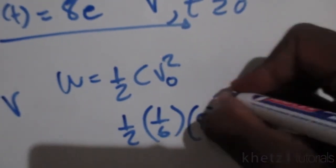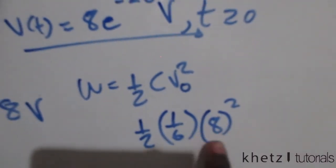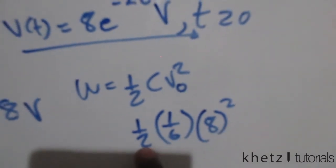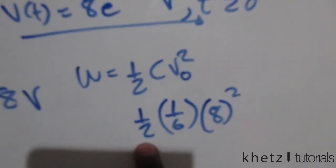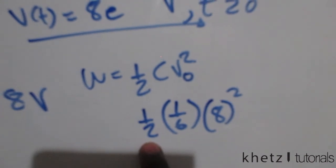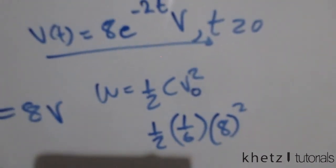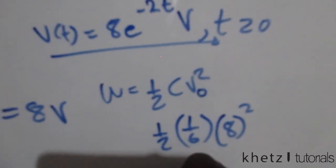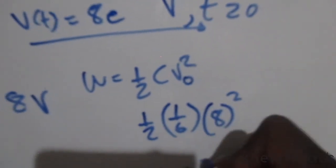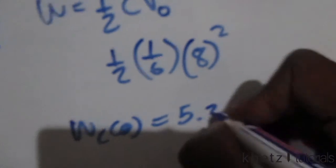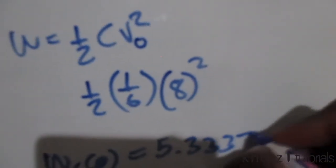Square that, so we're going to have 64 divided by 2, which is 32, and then 32 divided by 6 is going to be our final answer. Just punch that into your calculator and you should find 5.333 joules.